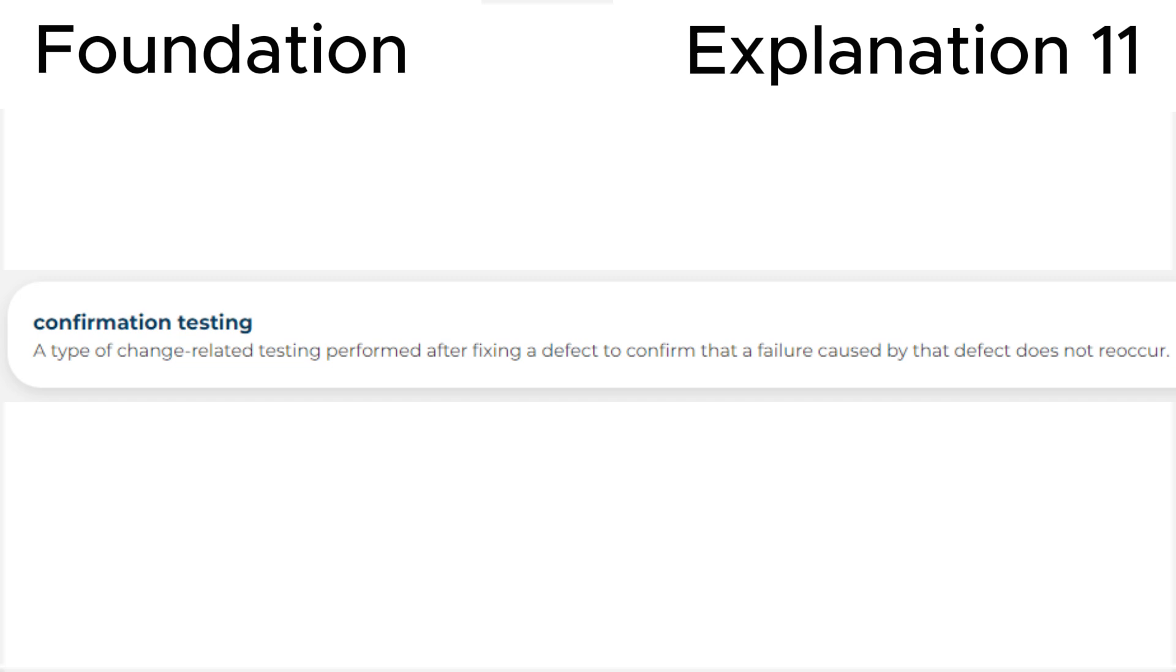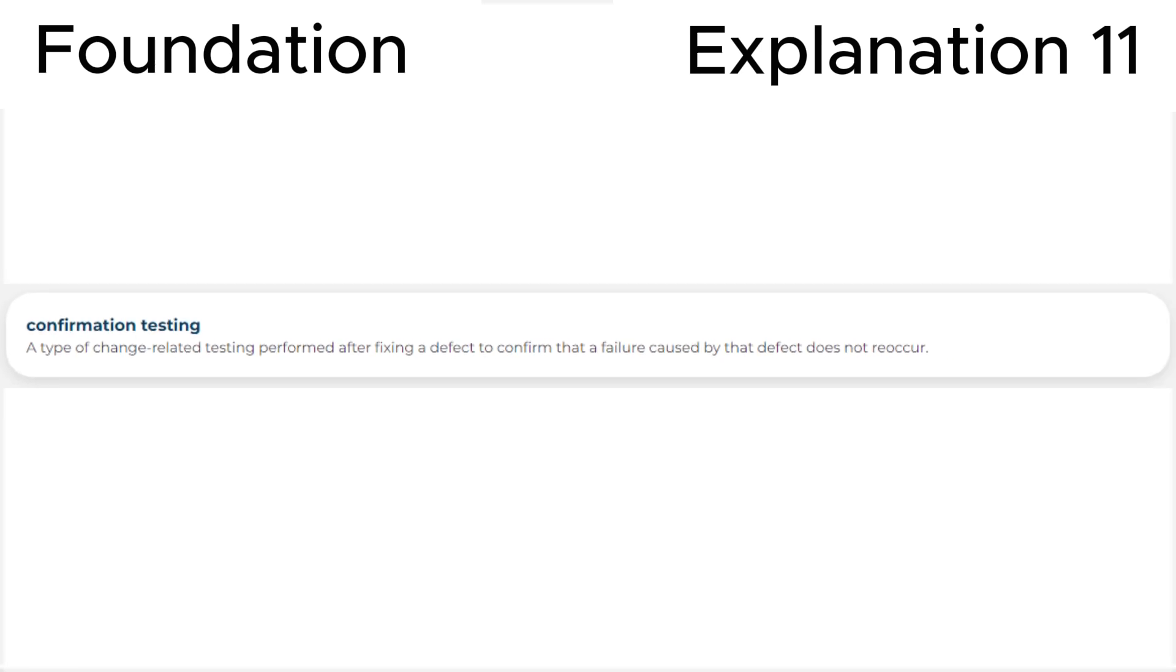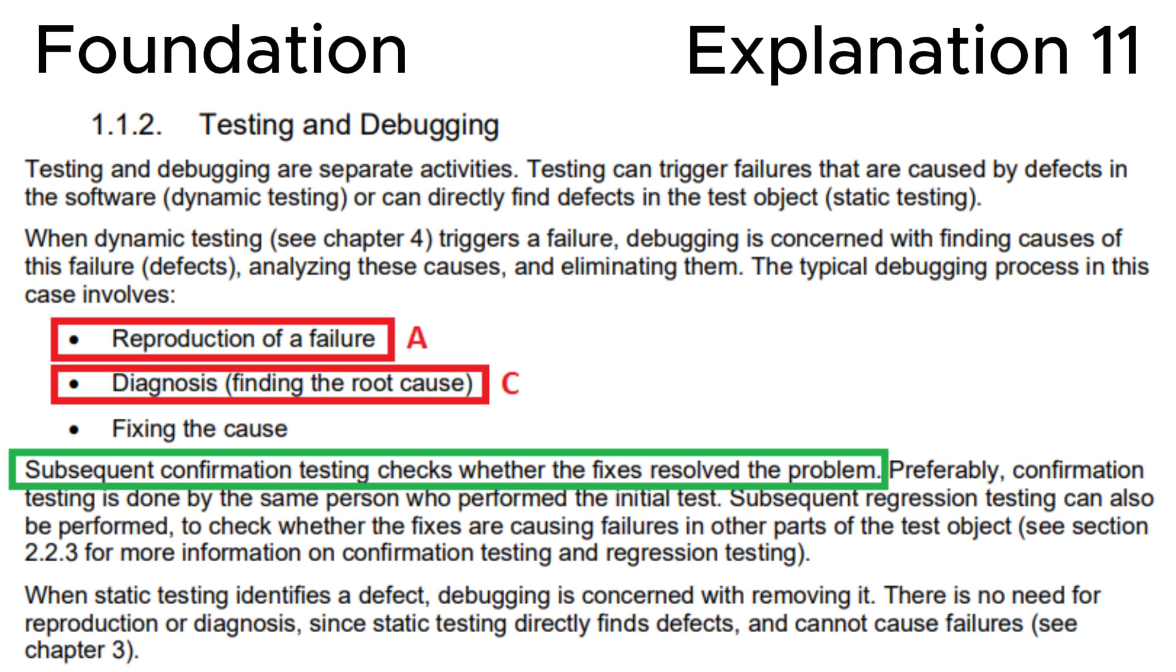Confirmation testing is a type of change-related testing performed after fixing a defect to confirm that a failure caused by that defect does not reoccur. Secondly, let's look at the section 1.1.2 testing and debugging in the ISTQB syllabus.